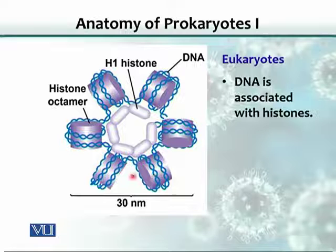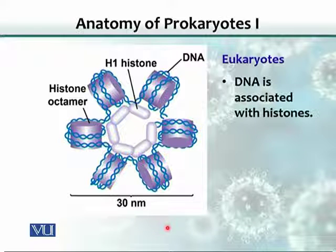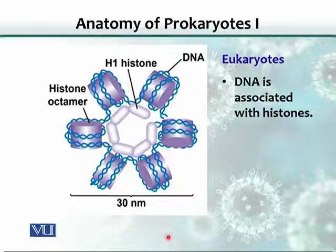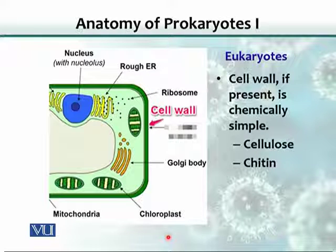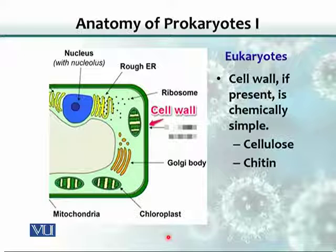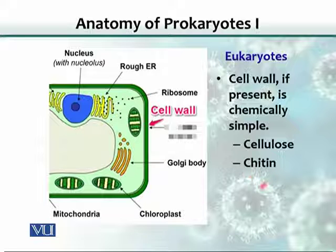Because DNA is a huge molecule in eukaryotic cells, it has to be packaged in some way. These histone proteins are used for packaging the large molecules of DNA in eukaryotes. Some eukaryotes also have a cell wall. As we saw in prokaryotes, the cell wall is composed of peptidoglycan, but if a cell wall is present in eukaryotes, it is composed either of cellulose — like in plant cells — or chitin, which is found in fungi.